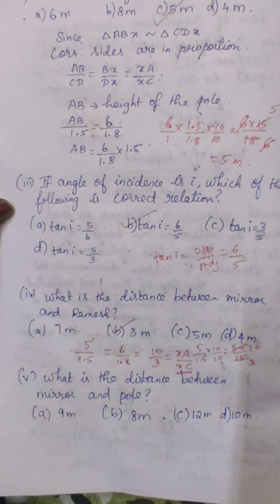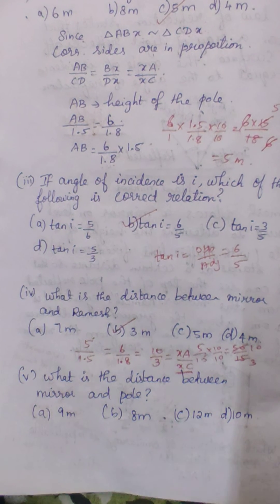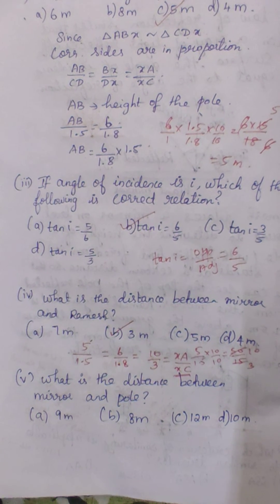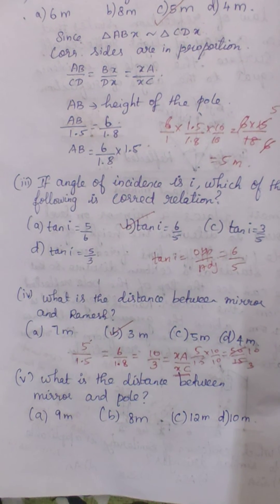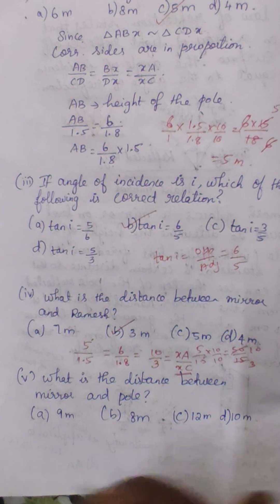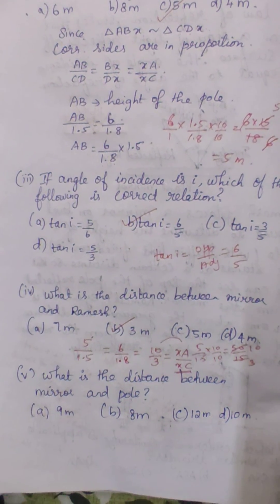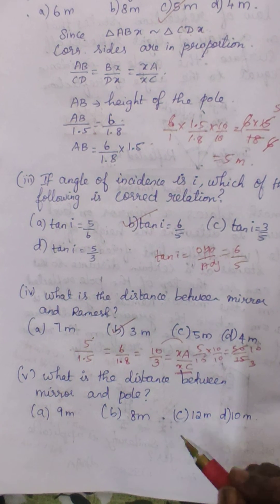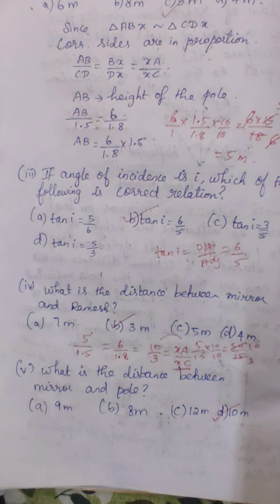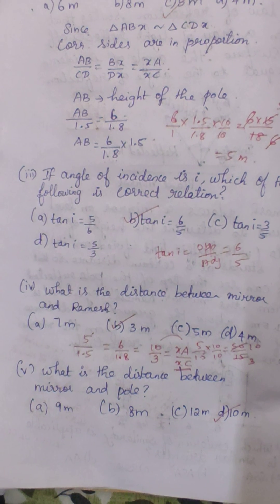What is the distance between the mirror and the pole? They are asking for X, A — the distance from the mirror to the top of the pole. X, A equals 10 meters, which we found already. Option D is the correct answer. Thank you. Bye.